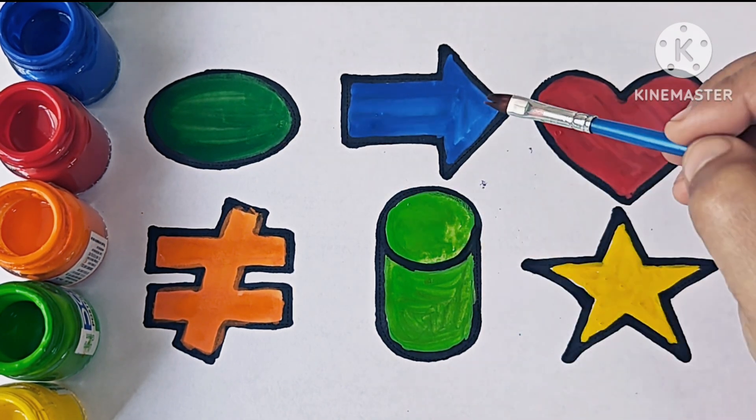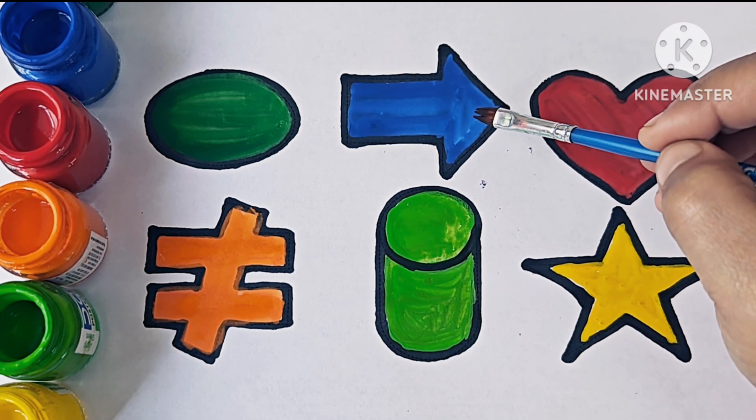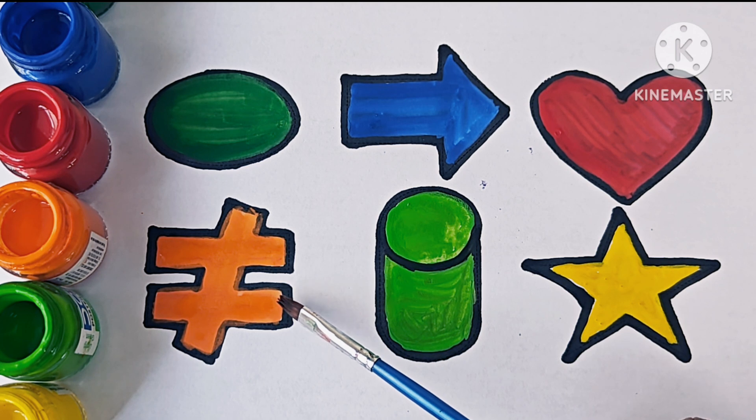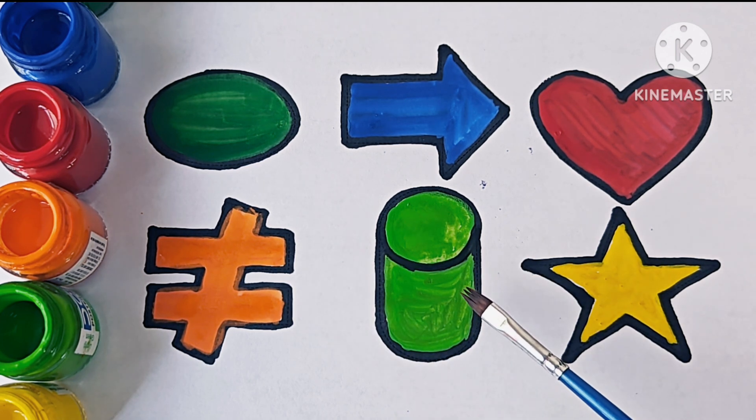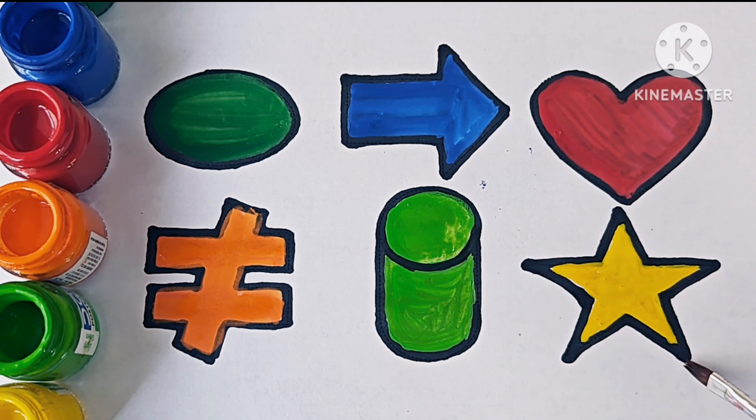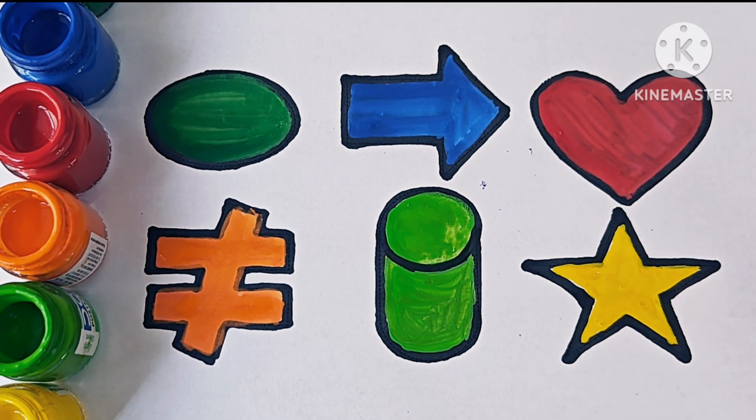It has no side. It is a right arrow, it is a symbol. This is heart, it is a shape. This is not equal to symbol. This is cylinder, it is a 3D shape. This is star, it has 5 points: 1, 2, 3, 4, 5. Five points. Thanks for watching this video.